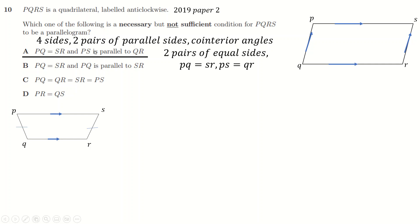But that means it's the answer because we were looking for necessary but not sufficient. It's necessary because you must have these two things. Not sufficient because we can draw a case where it doesn't happen. Now when we look at B, you might think: PQ parallel to SR, so this side parallel to this — it feels like both of those are necessary, which they clearly are. But they're not sufficient because we need other things as well.